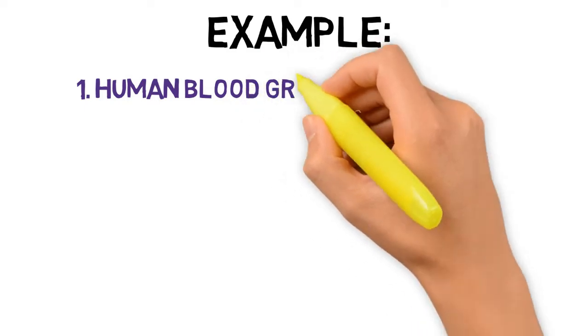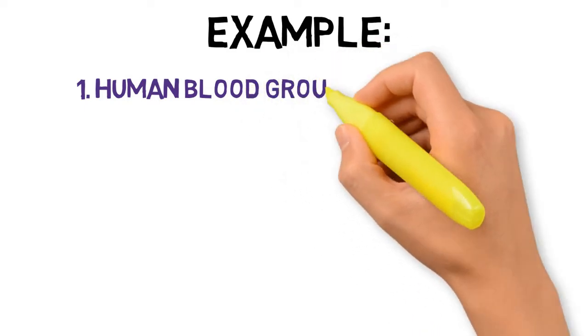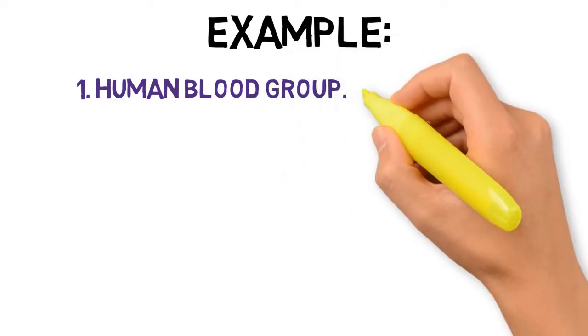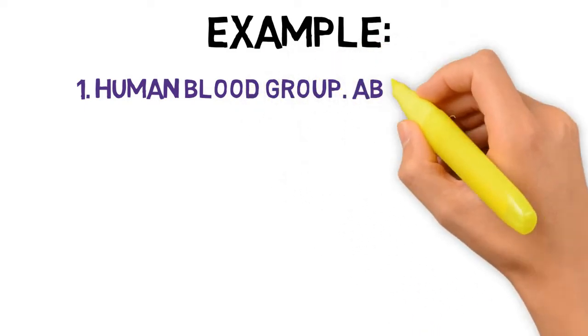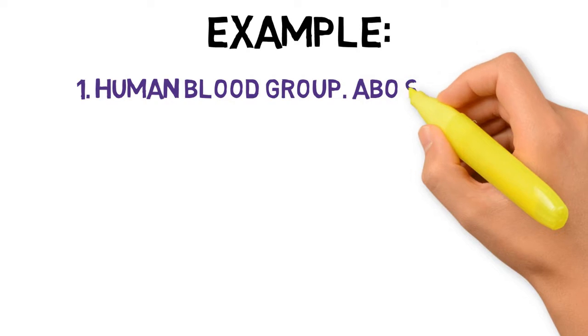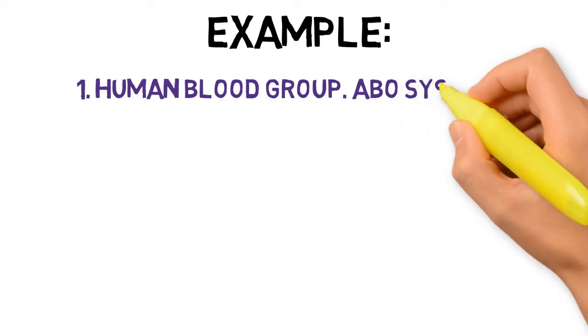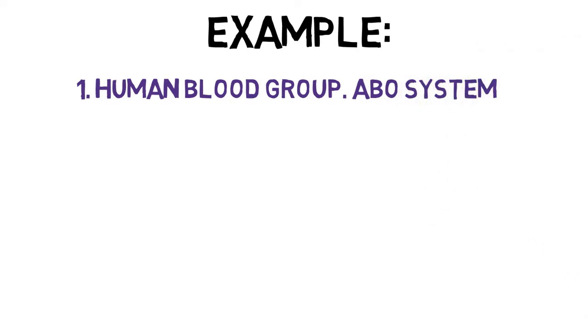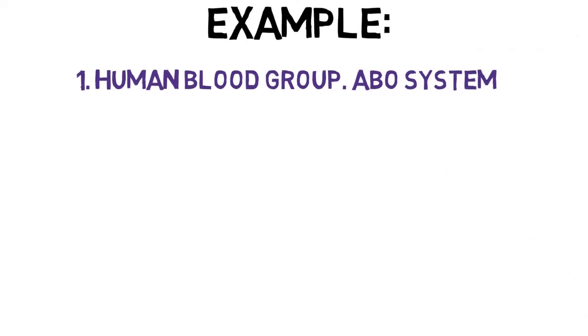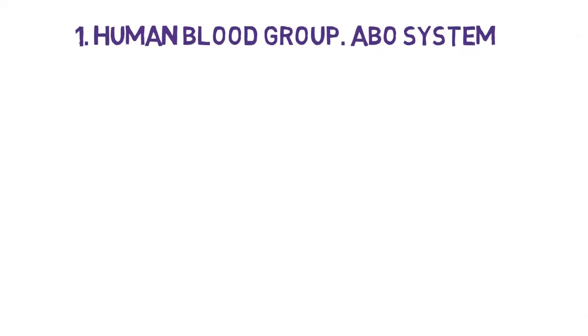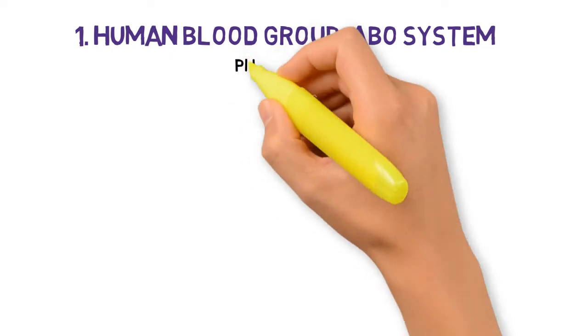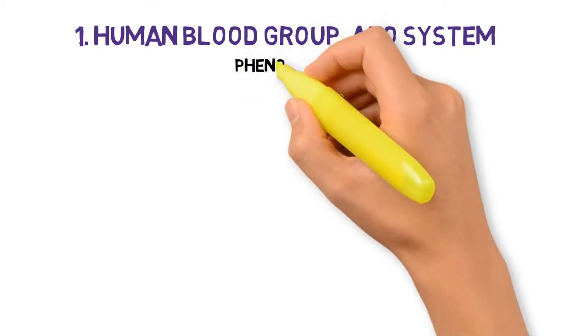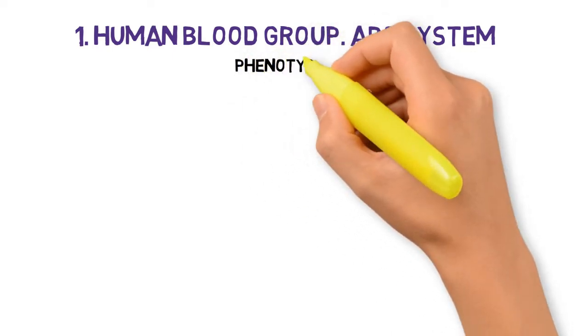Do you know who provided the ABO system? That's Karl Landsteiner. He is the scientist who discovered the ABO blood group system in human beings.